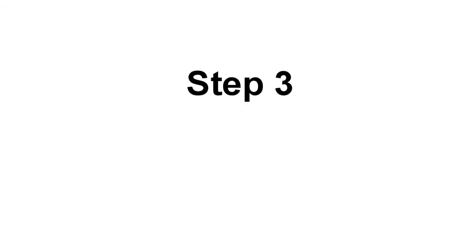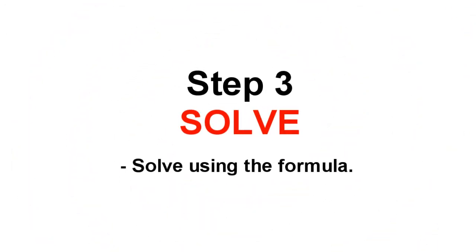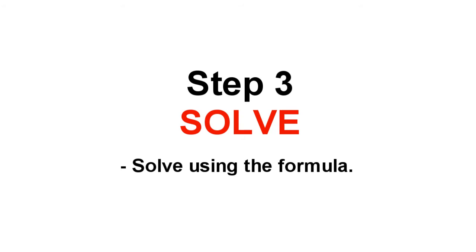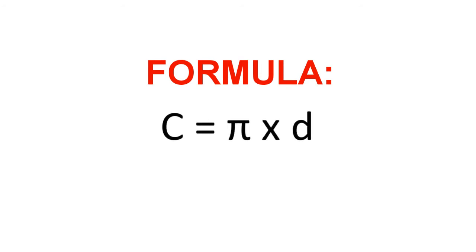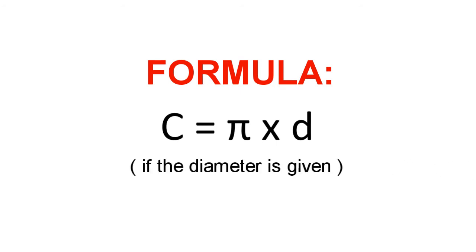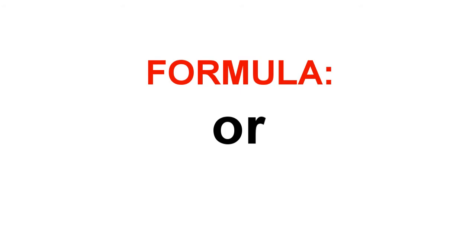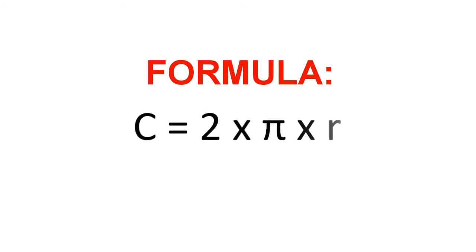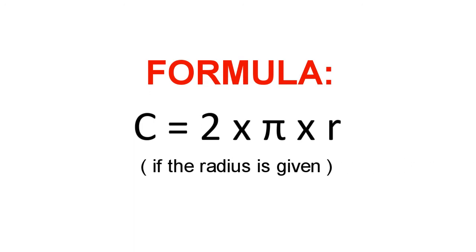Step 3: Solve using the formula. The formula in finding the circumference of a circle is: Circumference is equal to pi times the diameter if the diameter is given, or circumference is equal to 2 times pi times the radius if the radius is given.